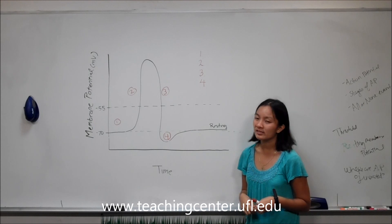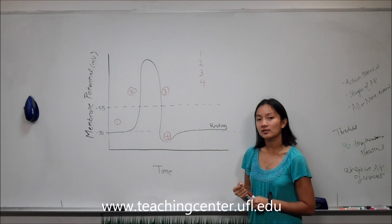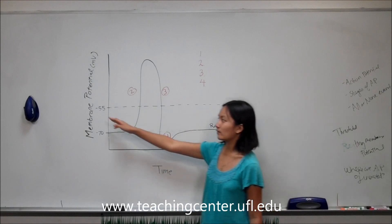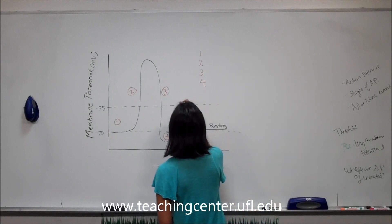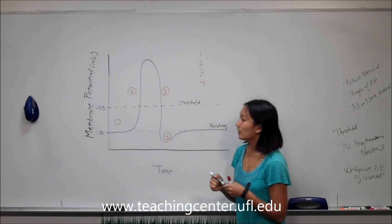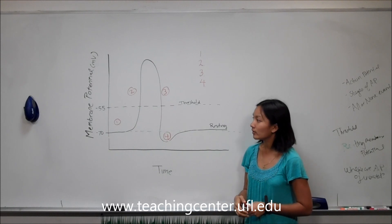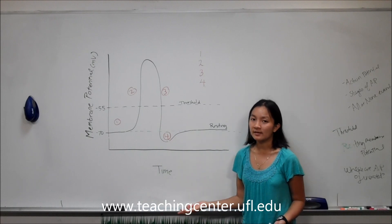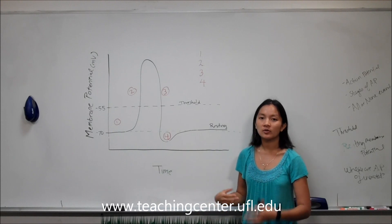Some professors and textbooks differ if it's negative 70, sometimes it'll say negative 65, but generally it's going to be a negative number. And this second dashed line on top at negative 55, this is going to represent our threshold value. Threshold value is the value that our cell neuron needs to attain to generate an action potential. So it's negative 55 in this example, but once again it could be a little bit higher or a little bit lower, depending on the textbook or neuron.